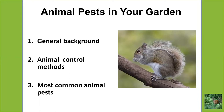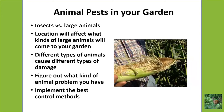We'll have a little bit of background at first, and then we'll talk about animal control methods - different ways that you might be able to control them. Then we'll talk specifically about the most common animal pests, each one individually, because they all have different character traits, different things that they do, and different ways to control them. We're mostly dealing with mammals - larger animals.